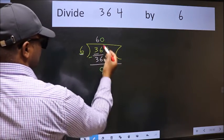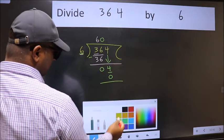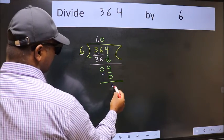So 6 into 0 is 0. Now we subtract and get 4.